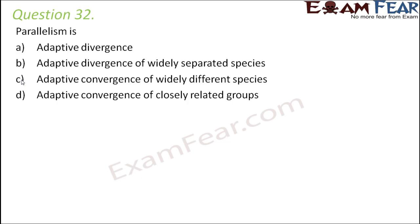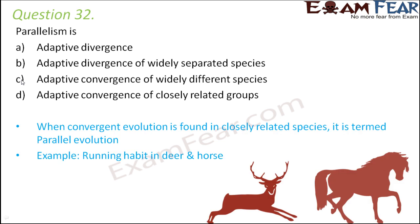Parallelism is: adaptive divergence, adaptive divergence of widely separated species, adaptive convergence of widely different species, or adaptive convergence of closely related group. So parallelism is basically another name for parallel evolution. When convergent evolution is found in closely related species, it is called parallel evolution.